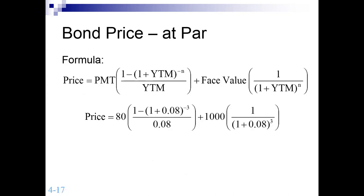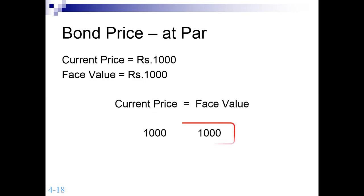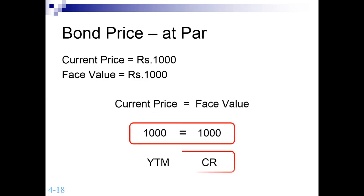Applying the formula again, a very interesting result appears: the price of the bond is equal to the face value. Under what condition is this possible? When YTM equals the coupon rate, the current price will equal the face value.